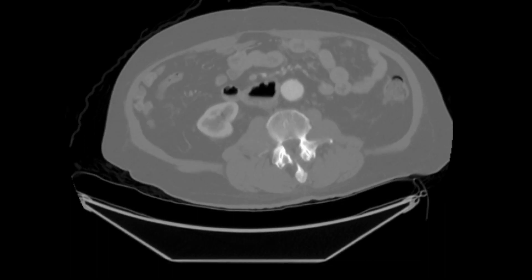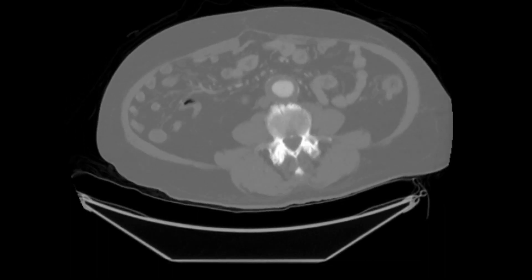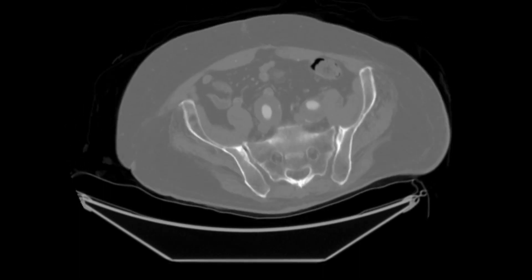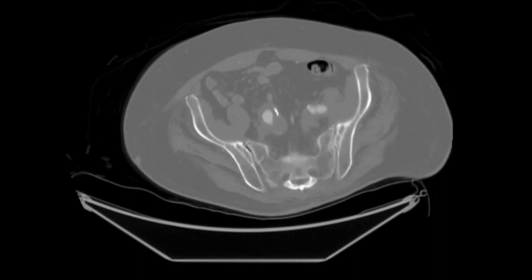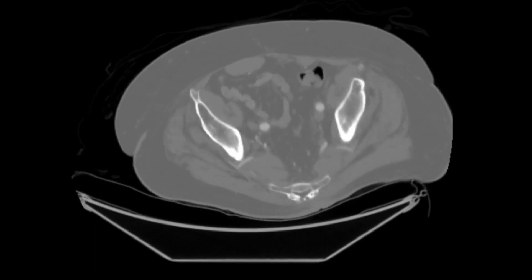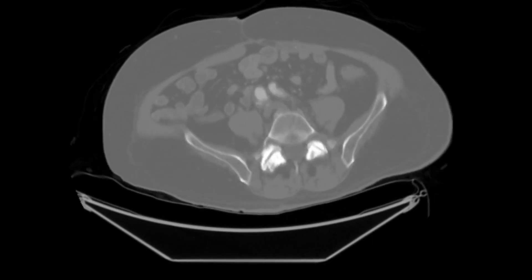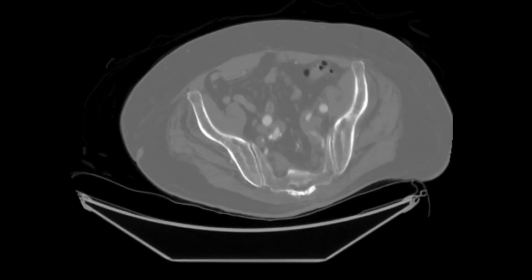Visualized here is a 4-centimeter abdominal aortic aneurysm. A 4.2-centimeter right common iliac and a 3.6-centimeter left common iliac aneurysm is also shown. The patient was also found to have aneurysmal dilatation of the right internal iliac artery.